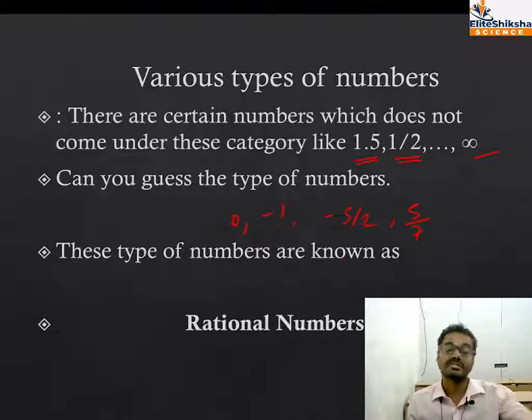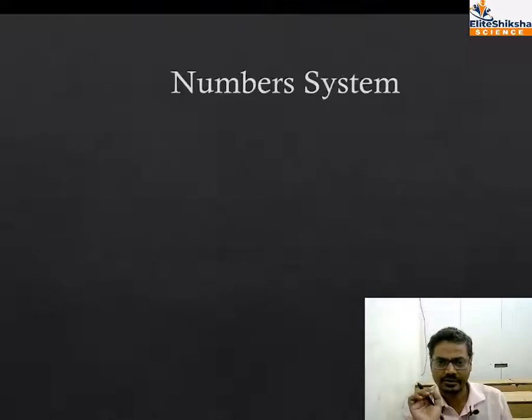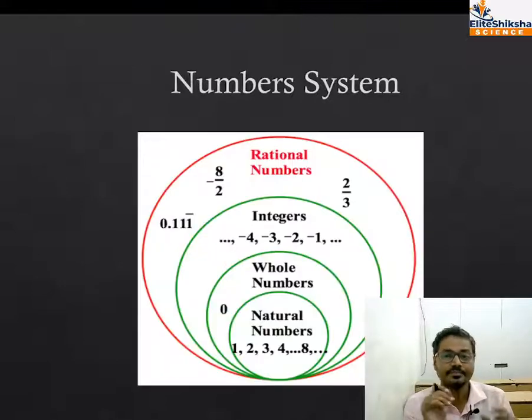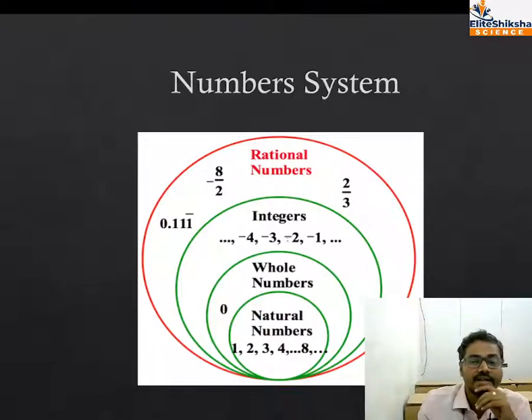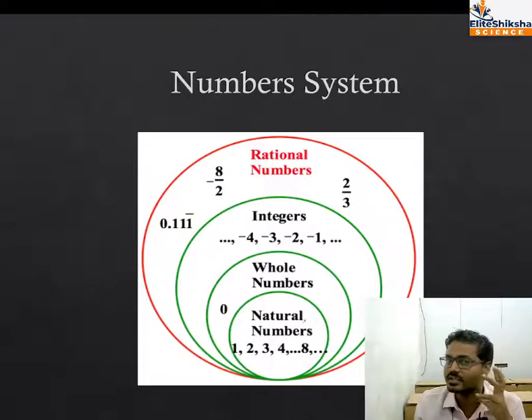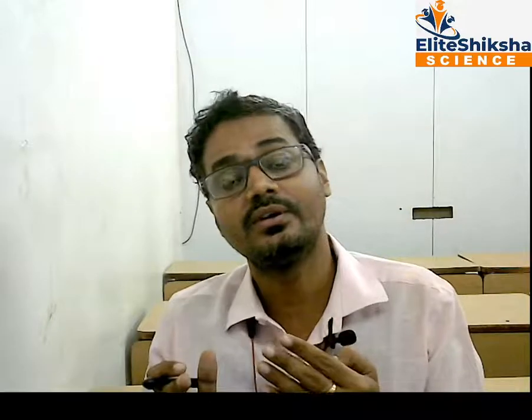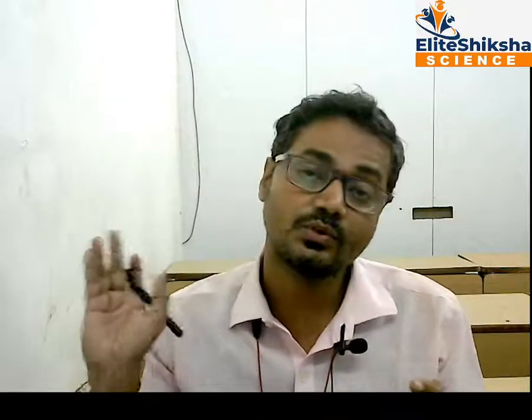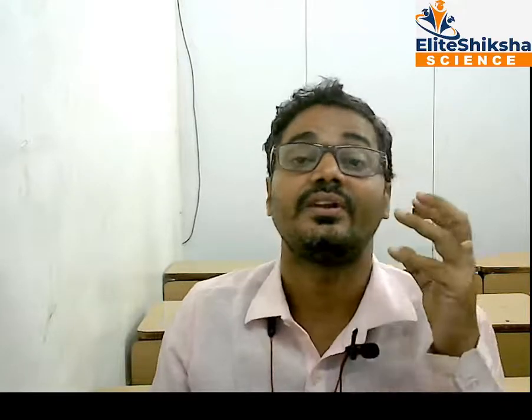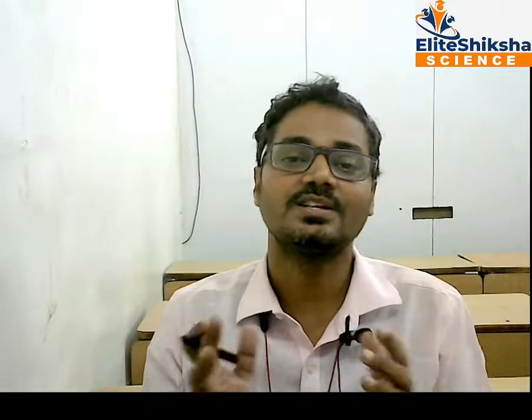We are talking about rational numbers. I'll show you the number system in another way. Let's recall - natural numbers are all counting numbers: 1, 2, 3, 4, 5. Then came whole numbers: 0, 1, 2, 3, 4, 5 to infinity. Then came integers which include minus 1, 2, 3, 4 and plus 1, 2, 3, 4 with zero. And rational numbers include 8 by 2, 3 by 2, minus 5 by 7, 1.2.